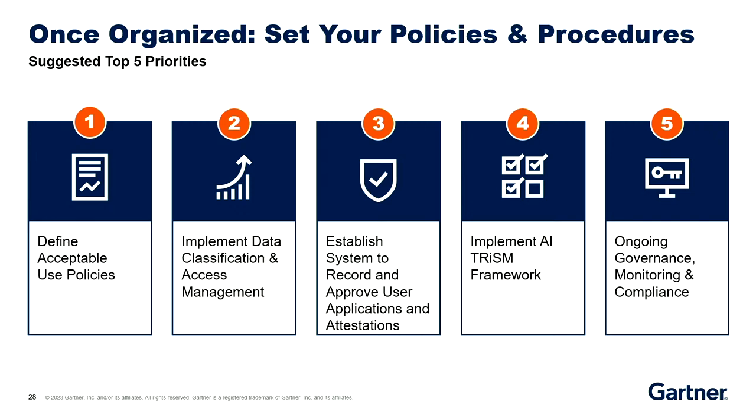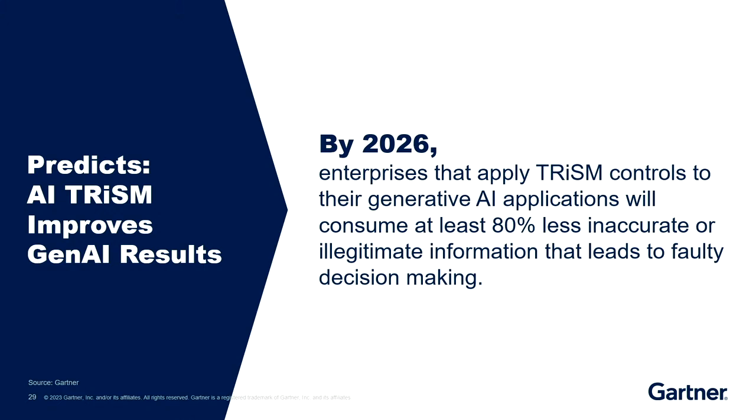Then you implement the tools and framework we talked about. A lot of the monitoring can happen electronically, but you still need to involve humans — people need to be aware of what they want to do and why. And finally, ongoing governance, monitoring, and compliance — security and risk management is an ongoing process that never ends, especially with Gen AI. But the good news is, if you do this, we predict — and this is a conservative prediction — that enterprises who apply these controls will consume at least 80% less inaccurate or illegitimate information that would lead to faulty decision-making. You just have to take one step at a time, one application at a time, one control at a time — and you can manage the risks before they manage you.